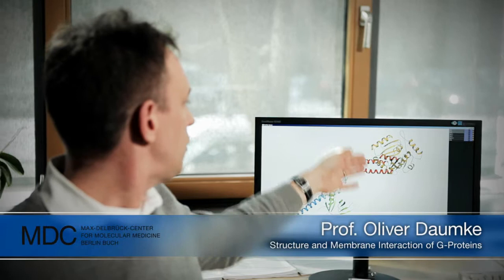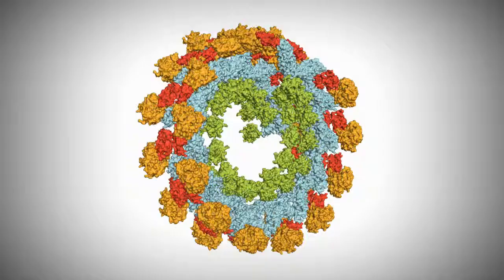This elongated module here in the middle mediates the arrangement of dynamin in ring-like structures and these ring-like structures are important for the uptake of nutrients into the cell.